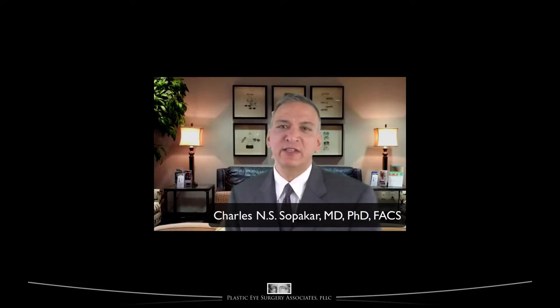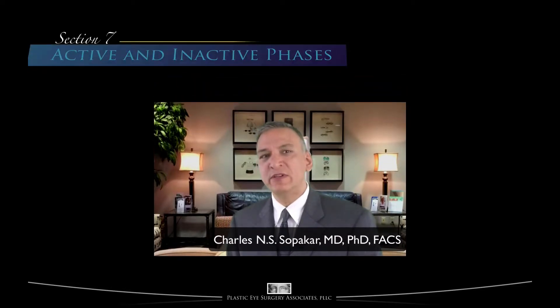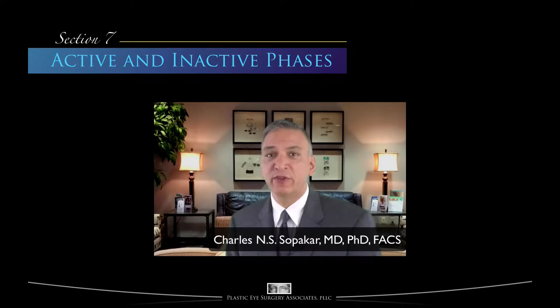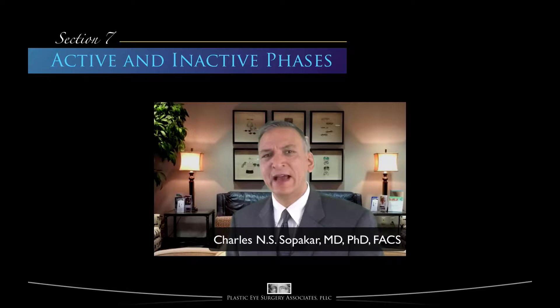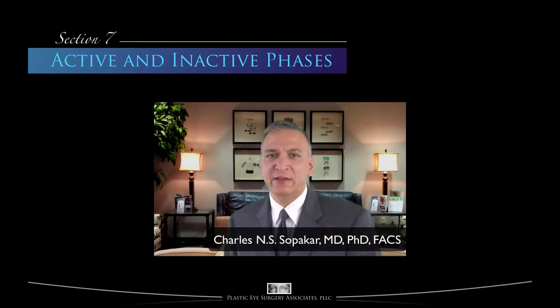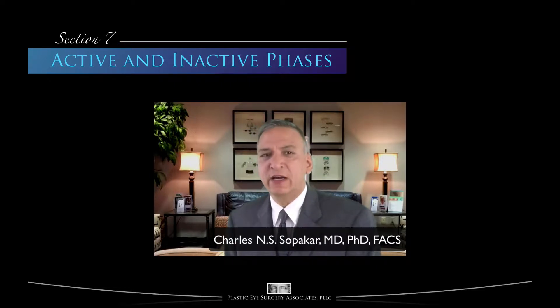In prior video sections, we discussed the basics of thyroid function and disorder, autoimmune diseases, and the characteristics of thyroid eye disease. In this section, we review the typical progression and natural history of the disorder and try to give some perspective on the questions: how long does it last? How bad will it get? In the next section, Section 8, when we discuss management of thyroid eye disease, it will be essential to understand the active and inactive phases that we will now explain in this video.